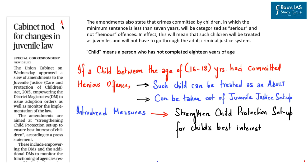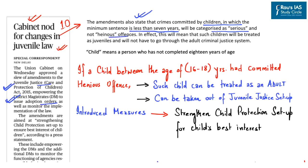The next news appears on page number 10: 'Cabinet not for changes in juvenile law.' The Union Cabinet has approved a number of amendments to the Juvenile Justice (Care and Protection of Children) Act 2015, and has empowered district magistrates to issue adoption orders under Section 61 of the Act. The amendment also states that crimes committed by children with minimum sentences less than 7 years will be categorized as serious offenses and not heinous offenses.